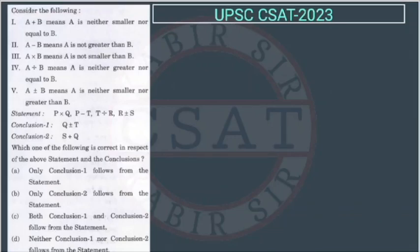Consider the following: 'A plus B' means A is neither smaller nor equal to B. They have given these definitions, so let's directly go to the statement. We have to find which one of the following conclusions is correct in respect of the above statement.